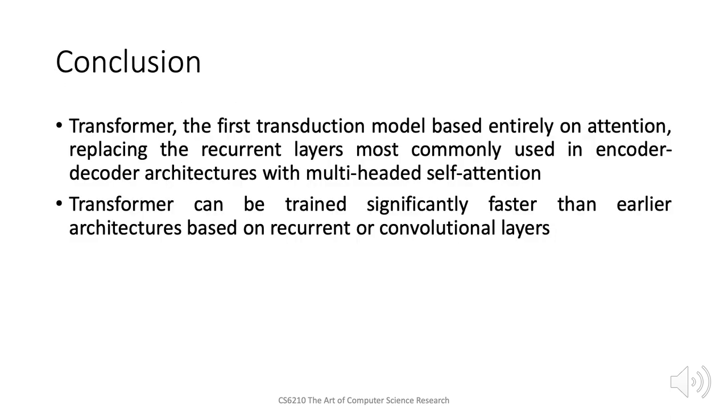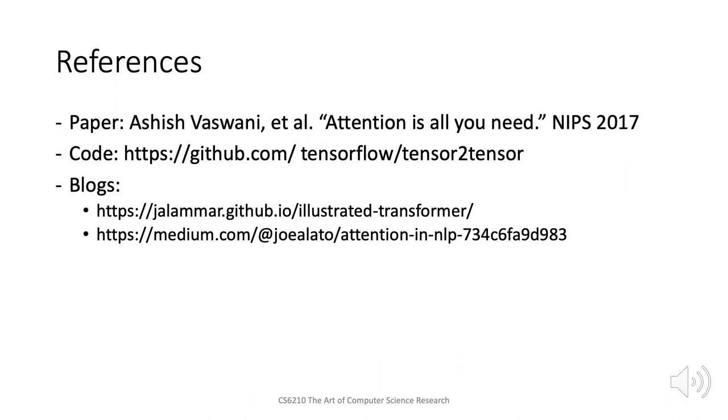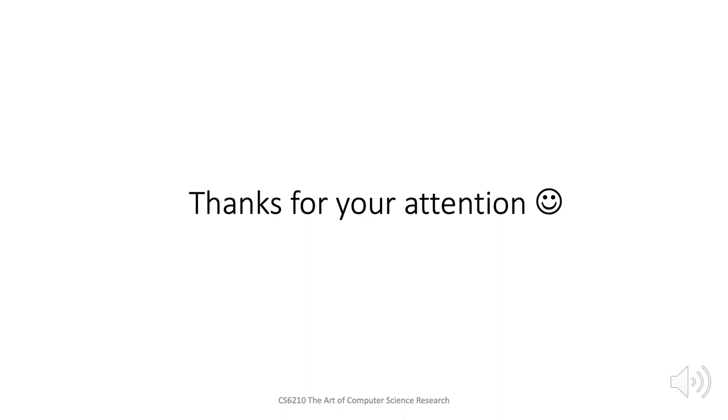Therefore, transformer is the first model based entirely on attention, which has replaced the recurrent and convolution layers and trains faster than the earlier architectures. For more information, please go ahead and read the paper. Here are the links to the paper, code and the related blogs. Thanks for listening.